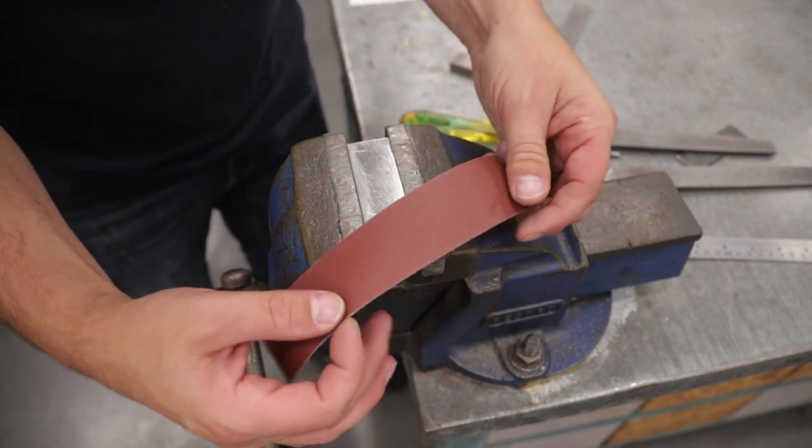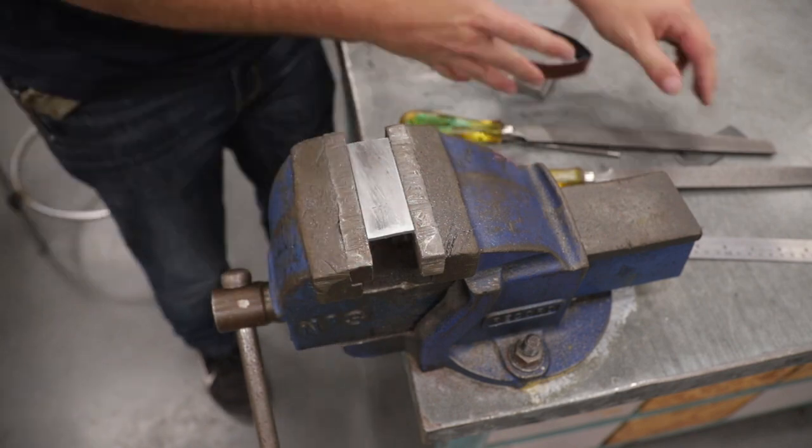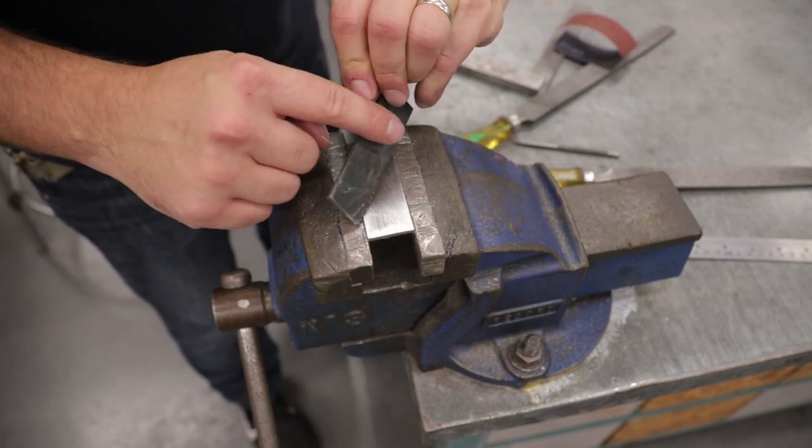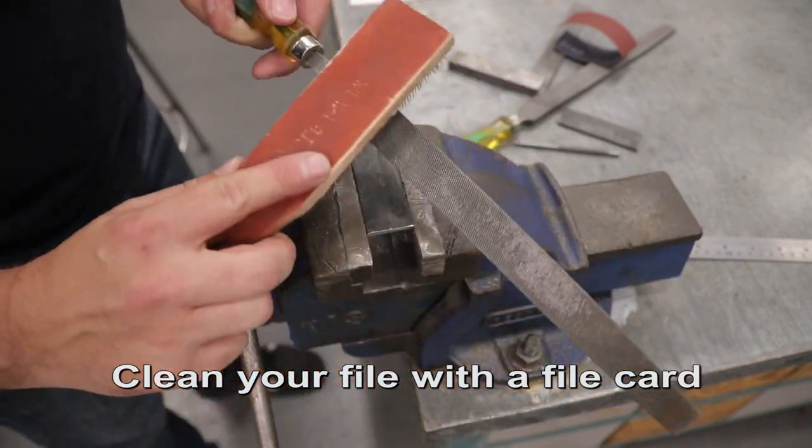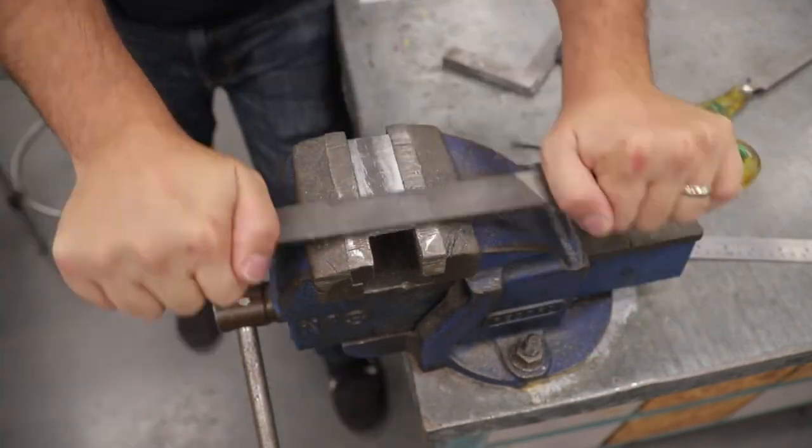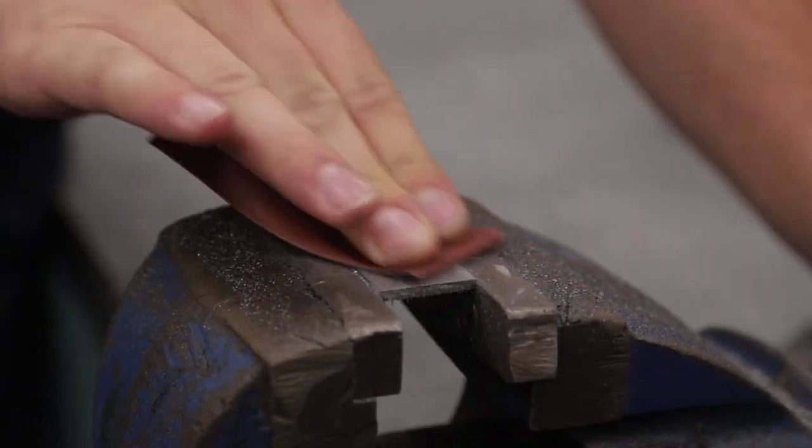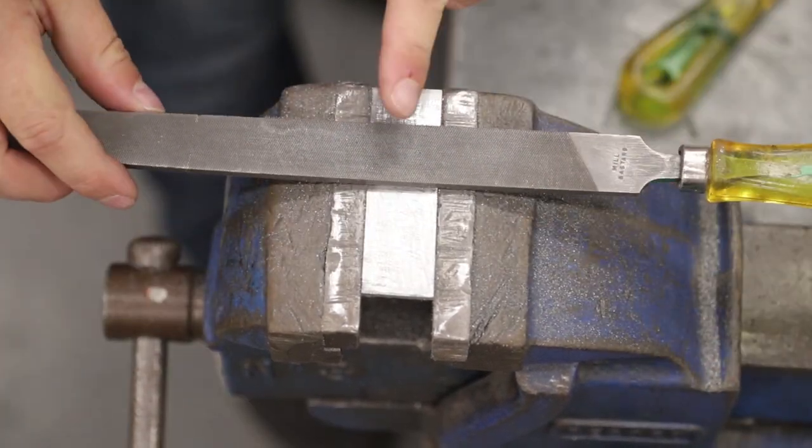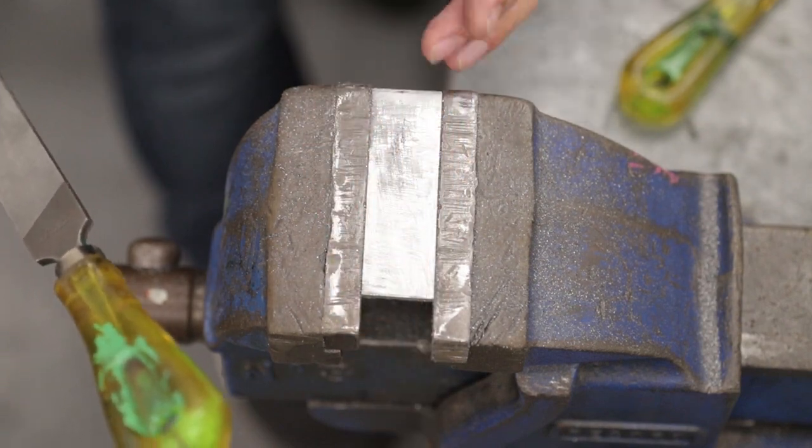If you want you can also finish it off with some sandpaper or emery cloth. Do that to your remaining pieces front and back. Every now and then use the file card to clean your file. By finishing with a draw file technique you're going to get all the lines going in one direction and that's going to make it look really nice.